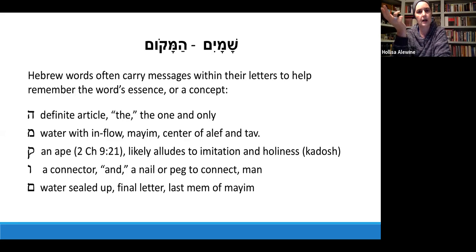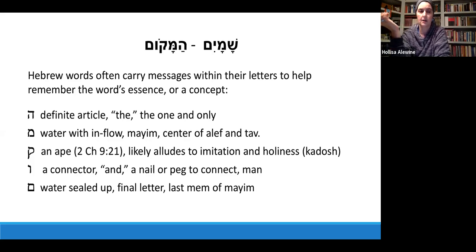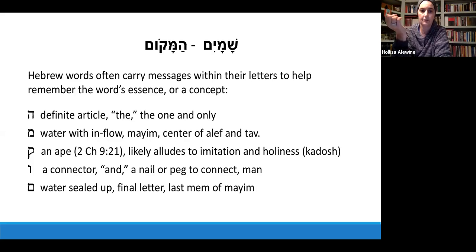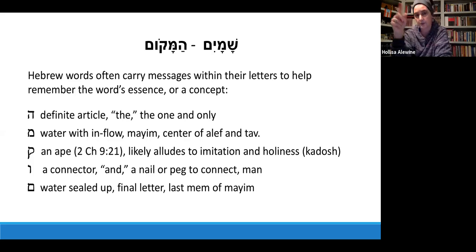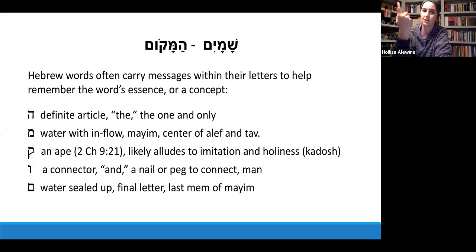I took the word Hamakom — the place — to analyze its letters. Hamakom, according to Yaakov, is the gateway to the Shemayim. The definite article 'ha' in front gives it specificity — the one and only place. The first actual letter of Makom is Mem, which designates water; the Paleo Hebrew looked much more water-like. Mem is the exact midpoint of the Aleph Beit. When you add Mem to Aleph and Tav, you get Emet, which is truth. So he who is the beginning and the end is also the middle because he is truth.